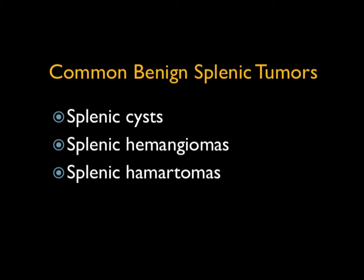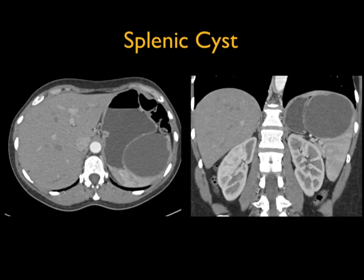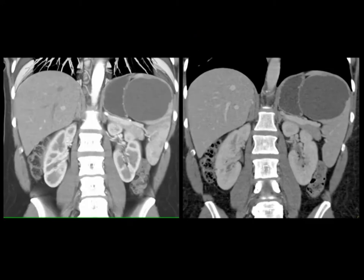Splenic cysts are like almost any organ that has cysts — well-defined water density, sharply marginated. At times, particularly epidermoid cysts can get so large they need to be resected, partly because people worry about them rupturing, which is pretty rare, but more just on sheer size. They have mass effect, can push on the stomach or diaphragm, and can cause discomfort for patients. You can see a very nice example of a splenic cyst about seven or eight centimeters pushing on the stomach. You can also push on the kidney, and you can imagine why the diaphragm might become elevated.